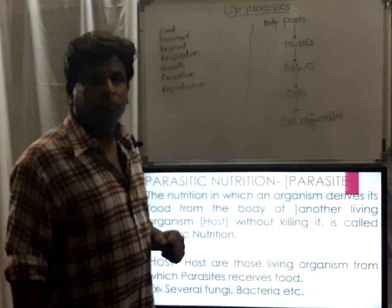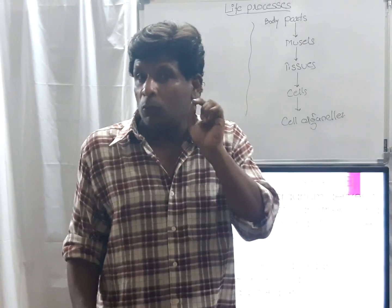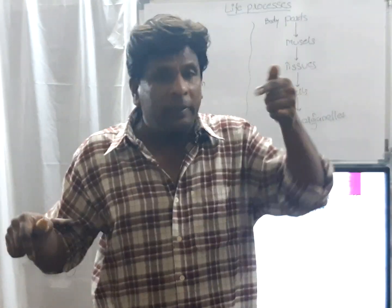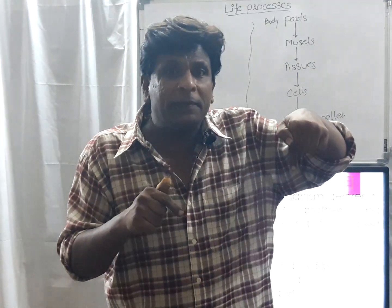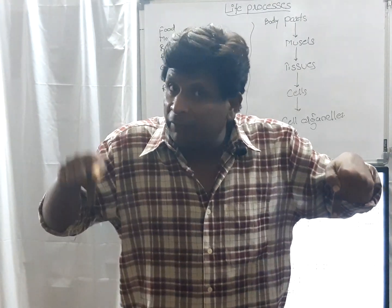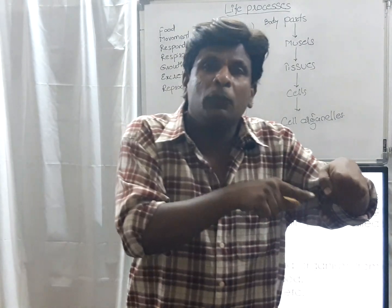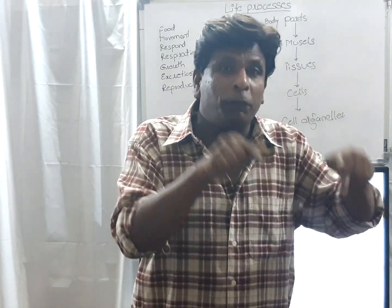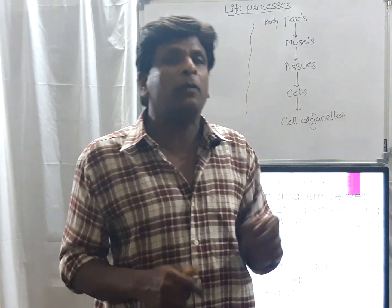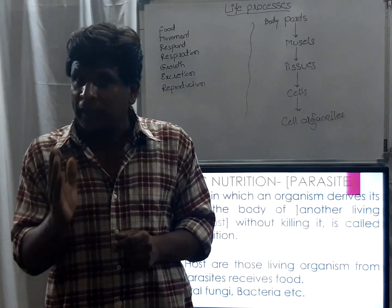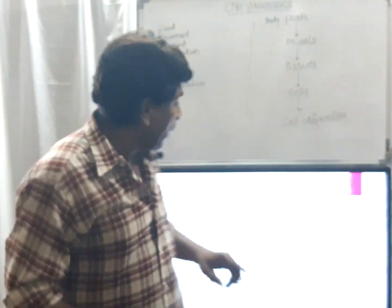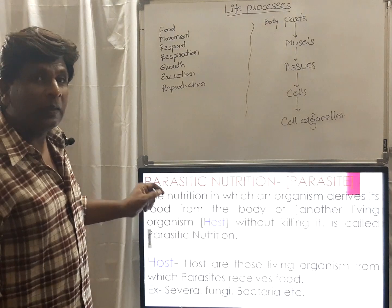Now the word 'host' — if organism A is a parasitic organism, A depends for its food on organism B, which is a living organism. That living organism B is called the host of A. If a man is the living organism and the parasitic organism depends on that man, then that man is called the host of that parasitic organism. So the living organism on which the parasitic organism depends is called the host.